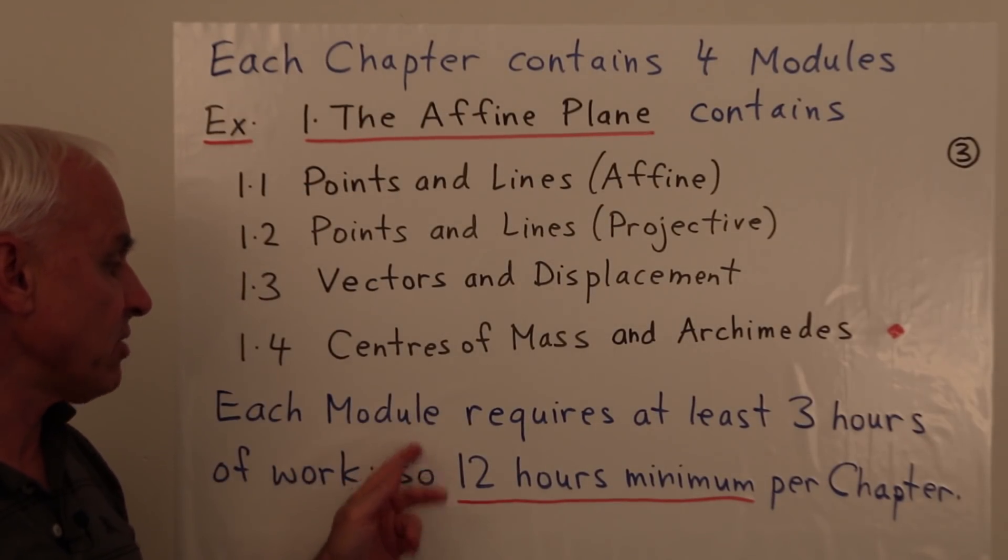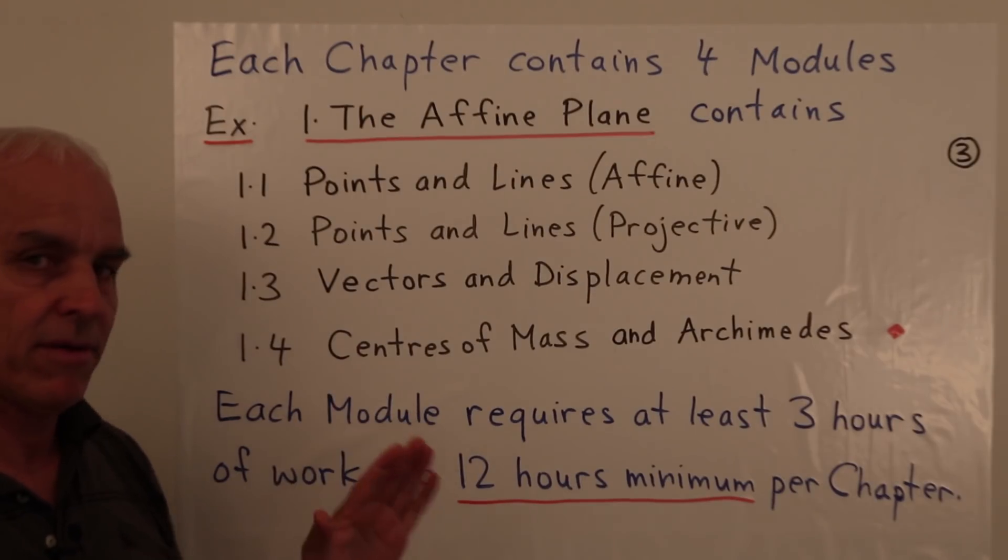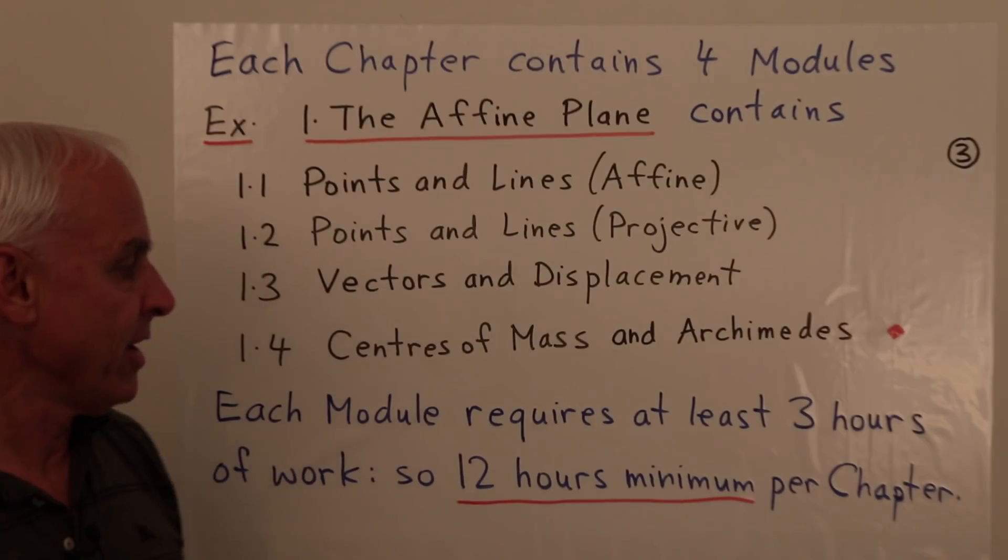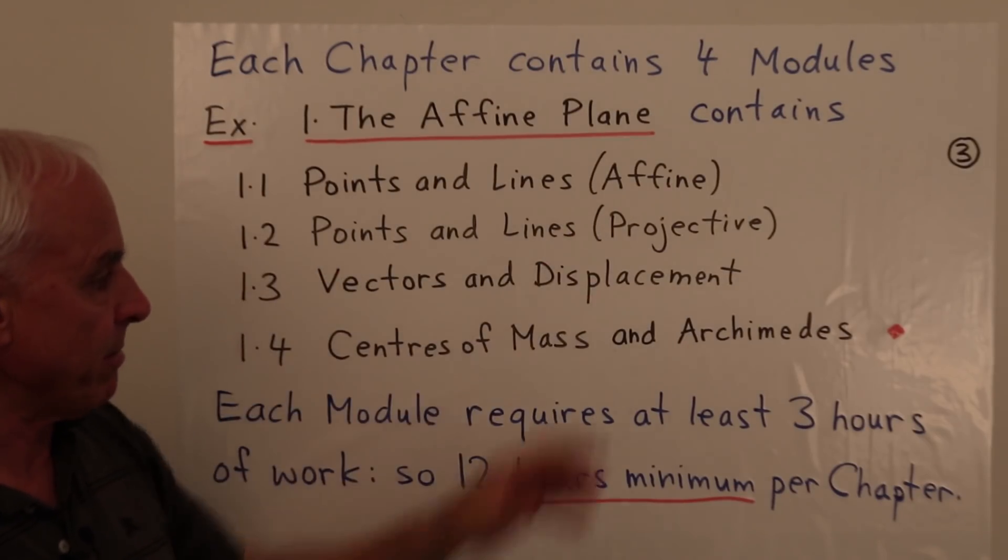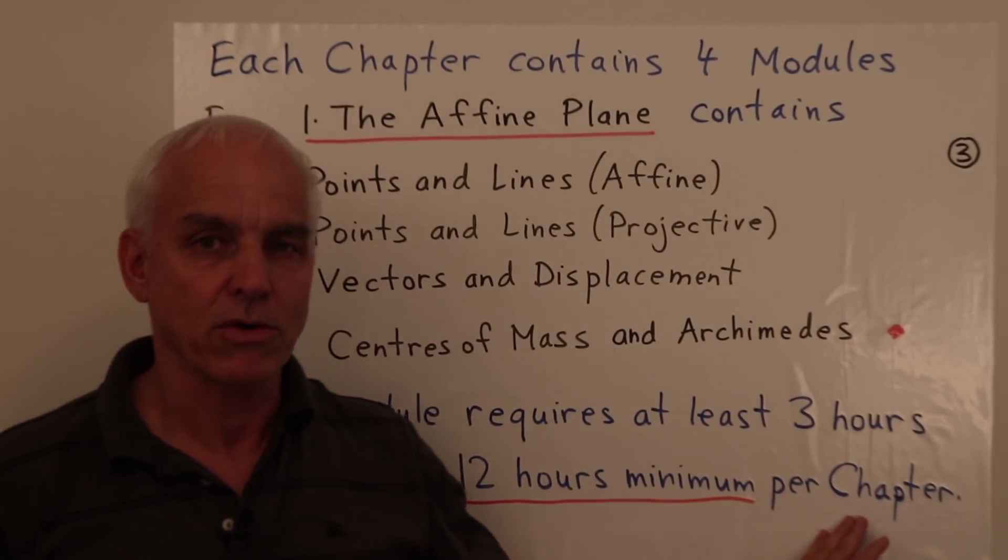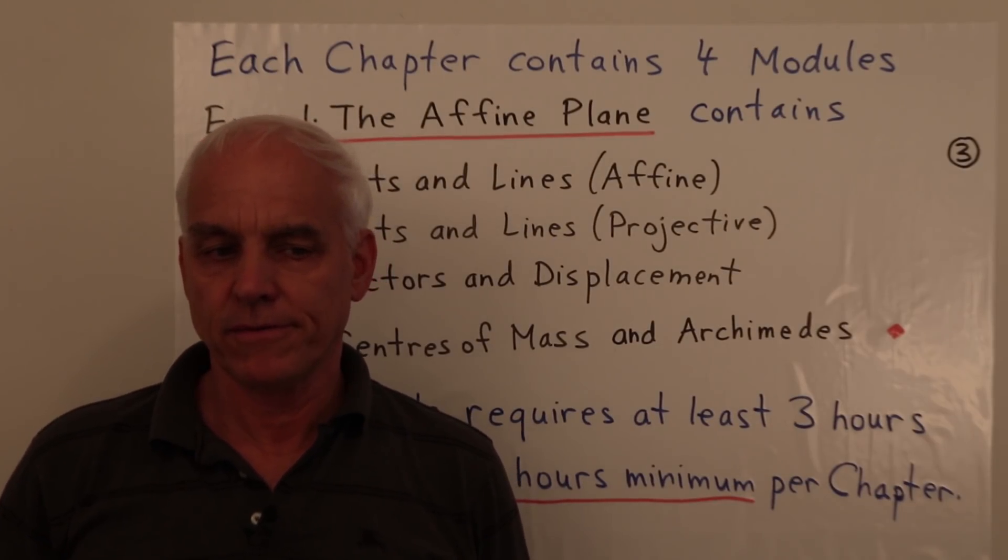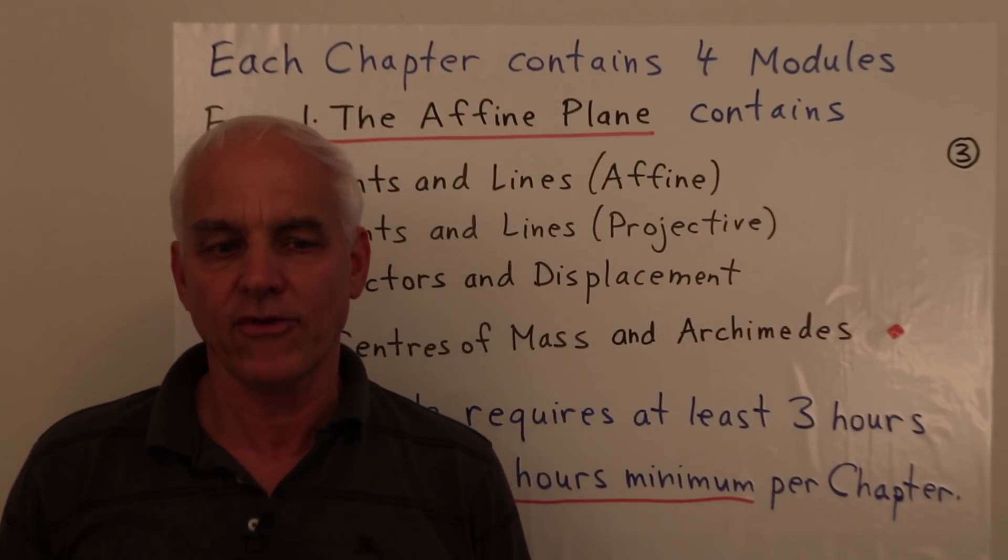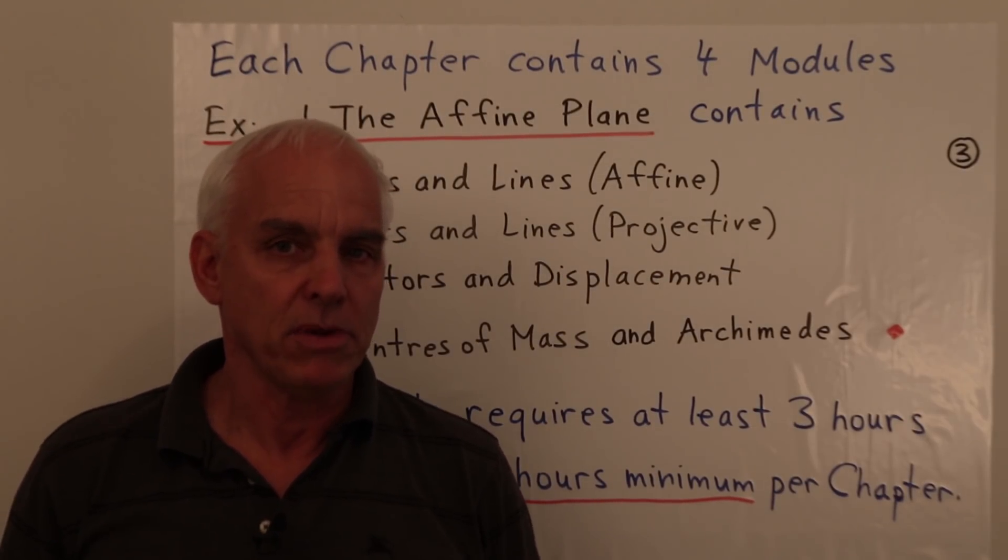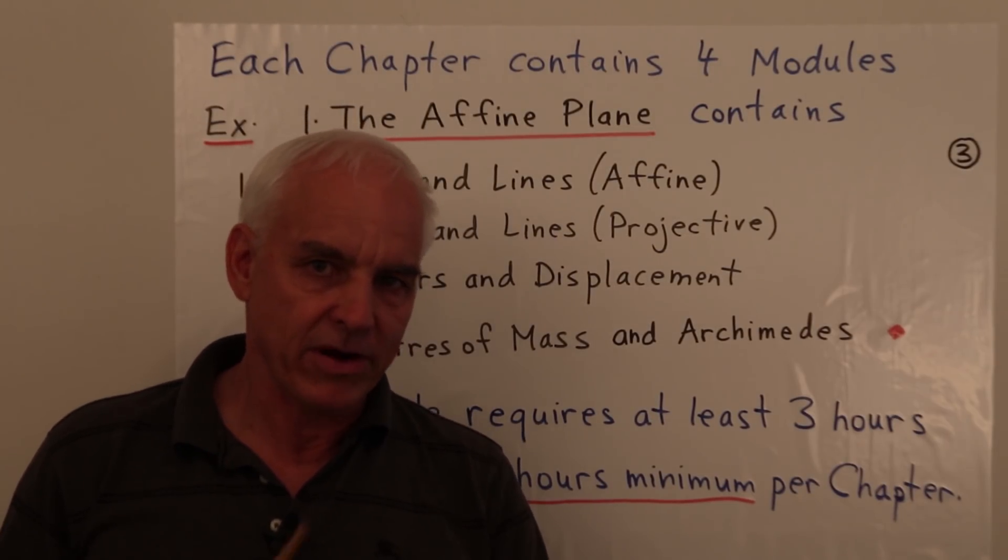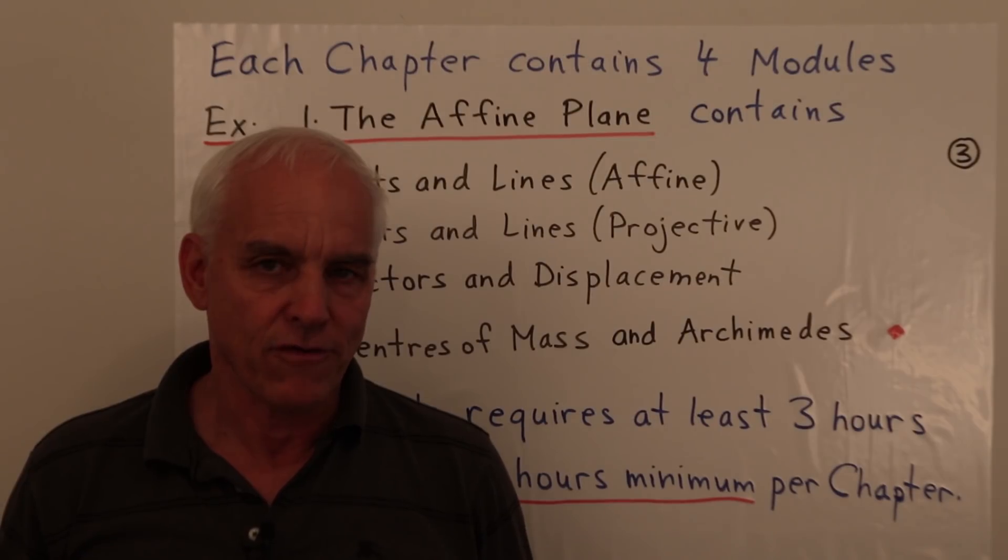I'm guessing that each module requires about three hours of work at the very least. That's kind of a minimum. So all together we can expect a minimum of around 12 hours of work to go through a chapter. But for some of you it will be more than that. You'll have to work harder because your background may not be up to the level of others. I think roughly 12 hours of work per chapter is reasonable.